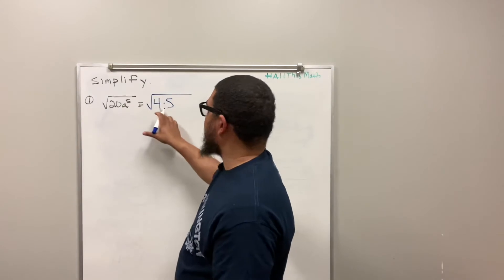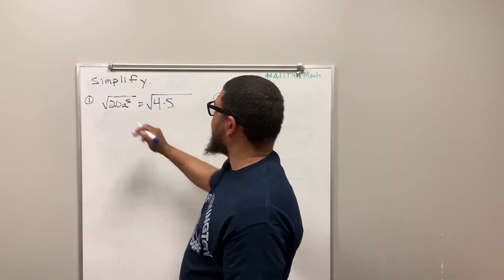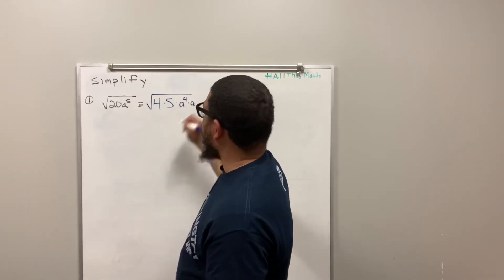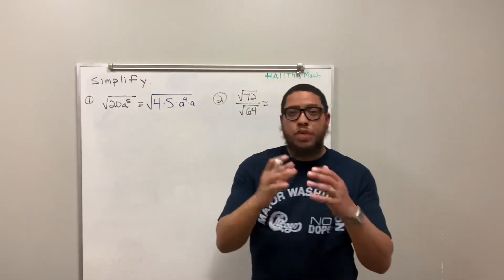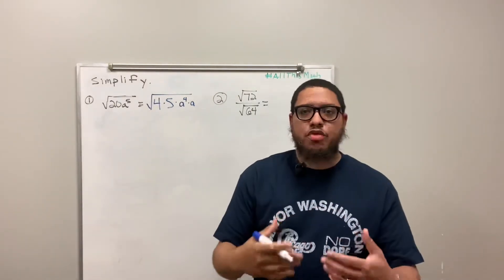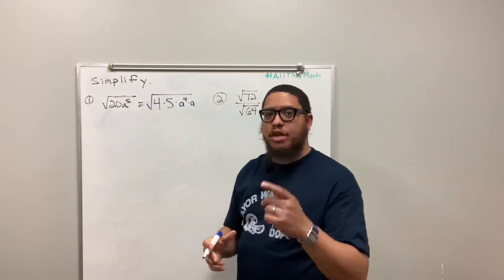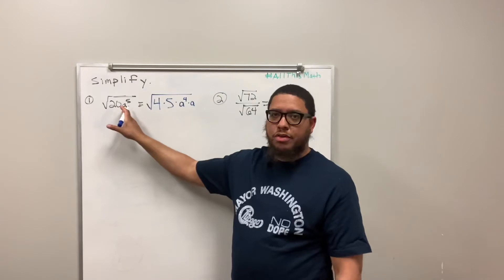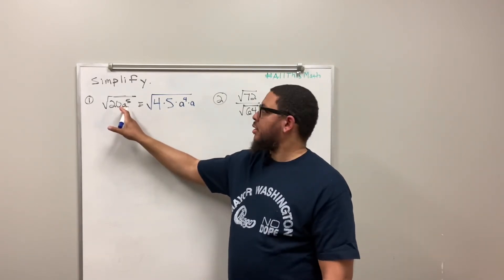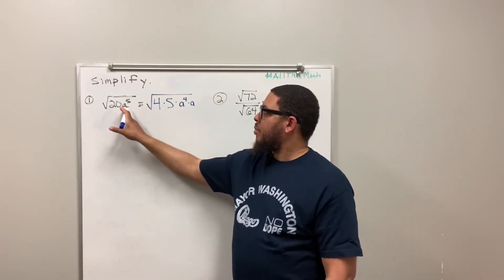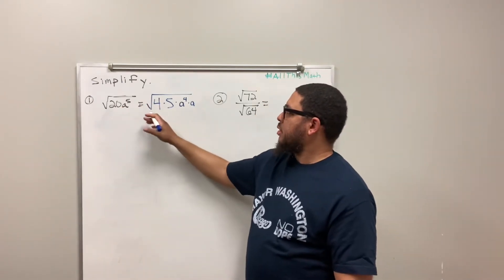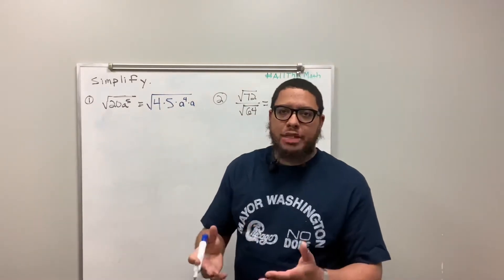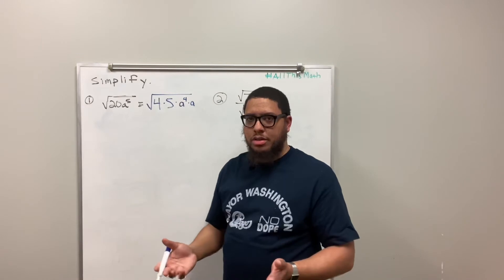So the 20 turns into 4 times 5. Now, what about the a to the 5th? The a to the 5th is going to turn into a to the 4th times a. Because we can do the opposite of the multiplication rule for exponents — we want to get a variable that has an even-numbered exponent. And a to the 4th times a is the same thing as a to the 5th.